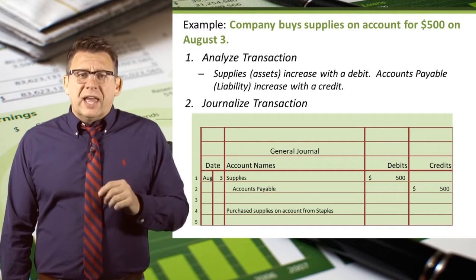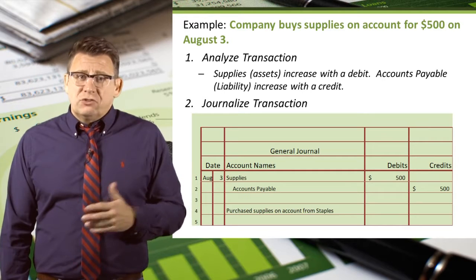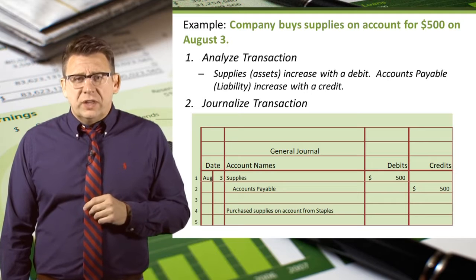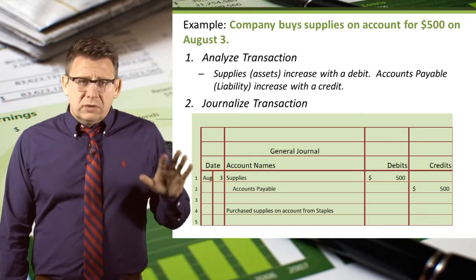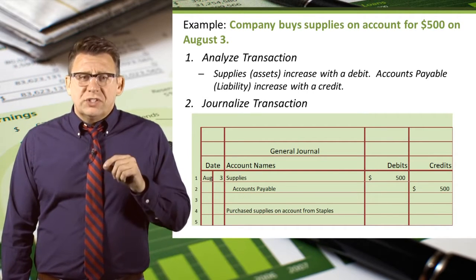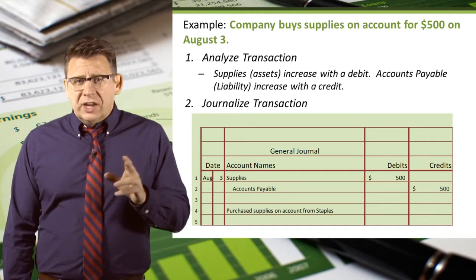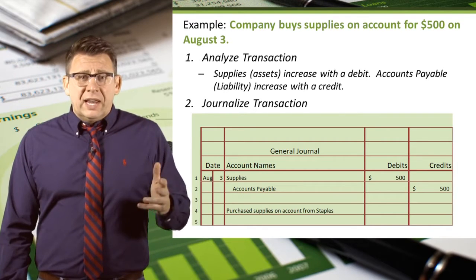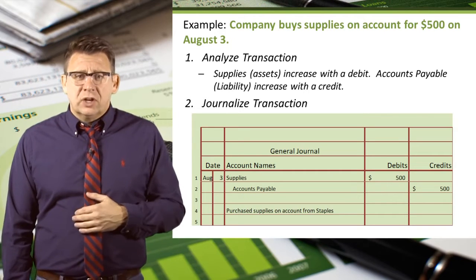Next, we enter accounts payable as the credit account. Normally we indent credits, as you can see here. And finally we enter $500 into the credit column. We enter the description of the transaction at the bottom. Often in accounting homework you won't need to enter a description, but you should be aware that in real life, journal entries always have at least this type of documentation. And now we're done — we've entered this transaction into the general journal by completing a journal entry.